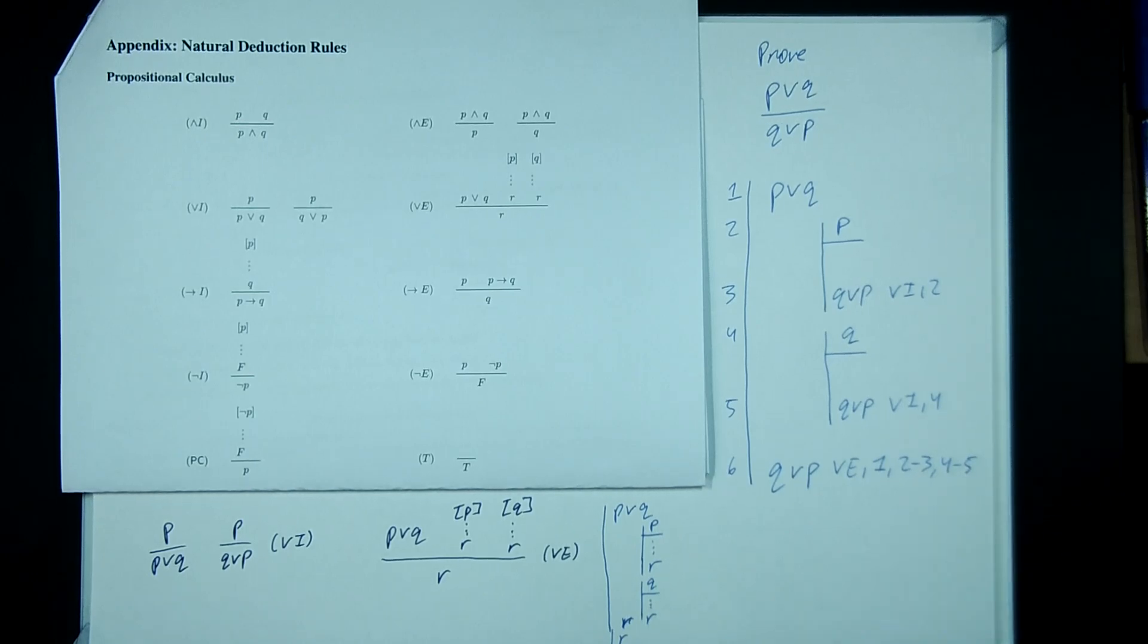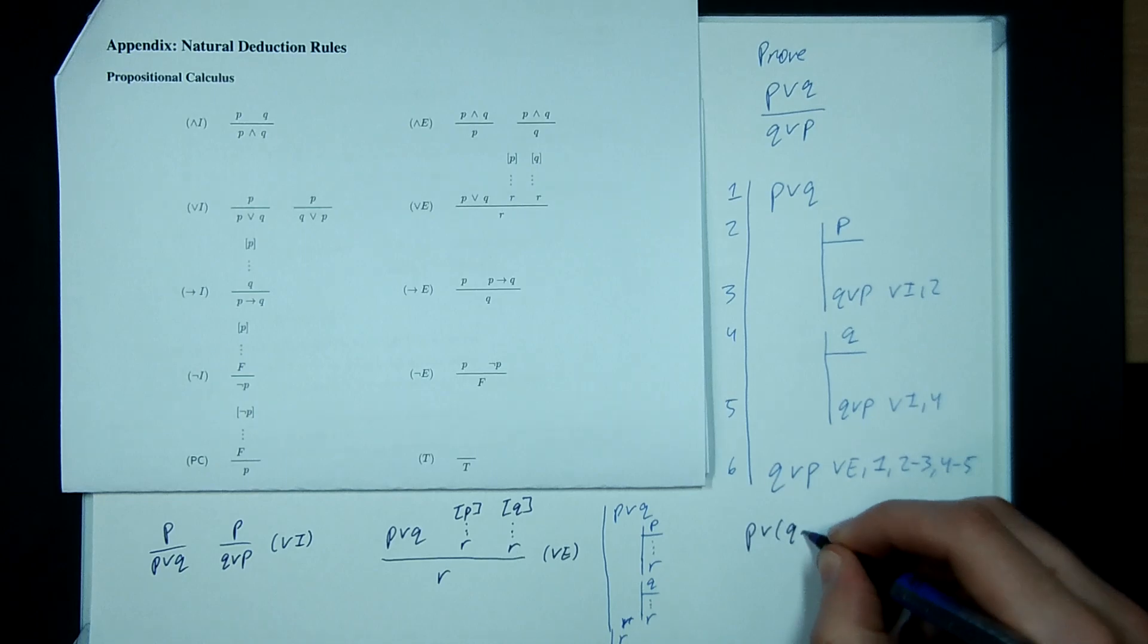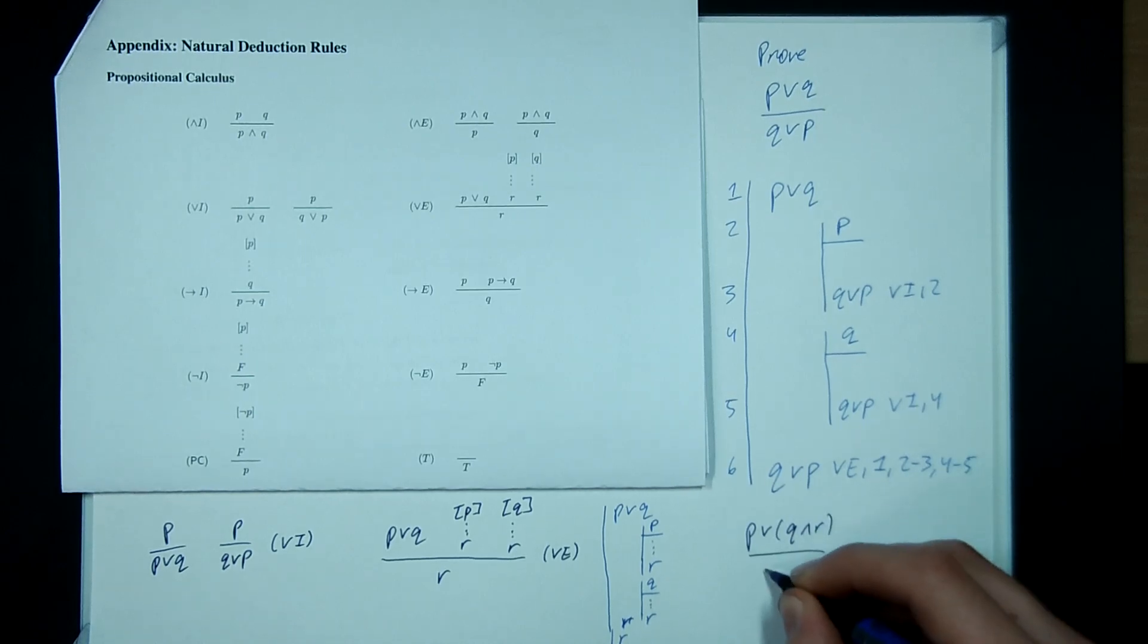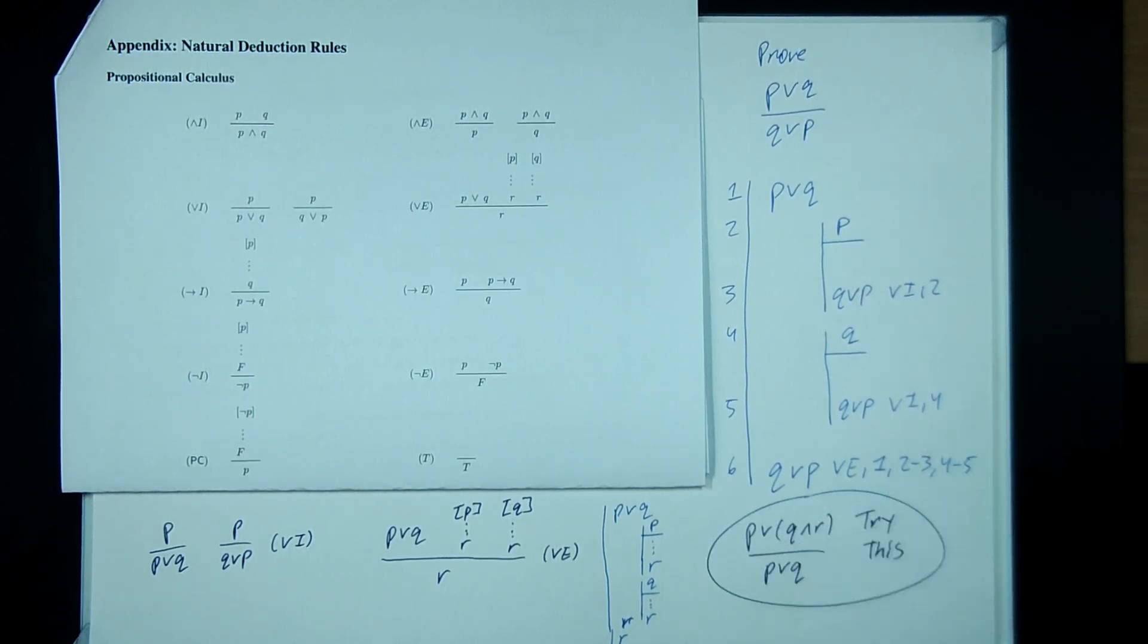So I recommend you have a go at a question that was on the tutorial sheet. Which is showing that P OR Q and R gives you P OR Q. So how have we got proving this? So let's get it. Yeah. Let's try it for the other results. All right. Here. You can keep it up.